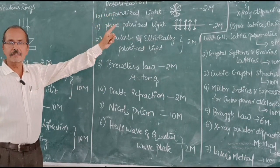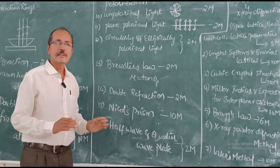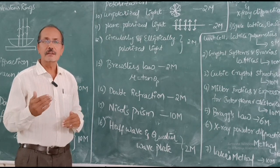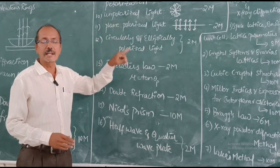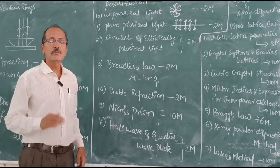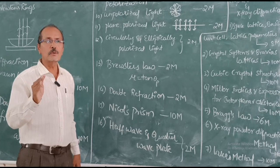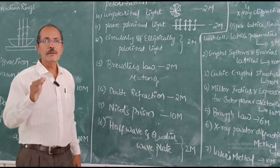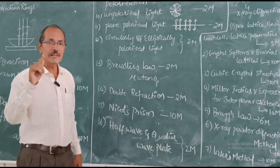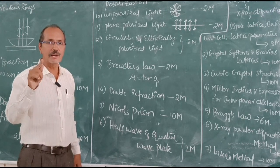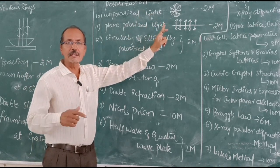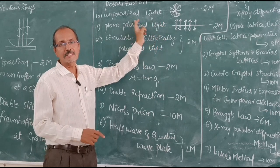The next important topic is polarization. Interference and diffraction reveal that light has a wave nature, but they do not tell whether light waves are transverse or longitudinal. The phenomenon of polarization establishes the fact that light waves are transverse waves — that is the importance of polarization. A light wave is an electromagnetic wave that travels in the form of varying electric and magnetic fields. These fields vibrate perpendicular to each other and perpendicular to the direction of propagation. We take the direction of vibration of the electric field as the direction of polarization. In unpolarized light, electrical vibrations occur in all directions.